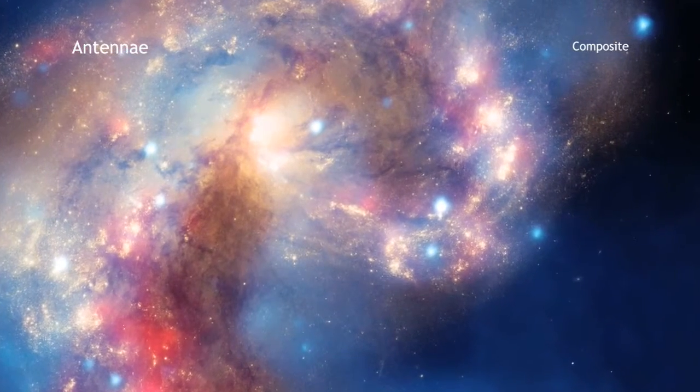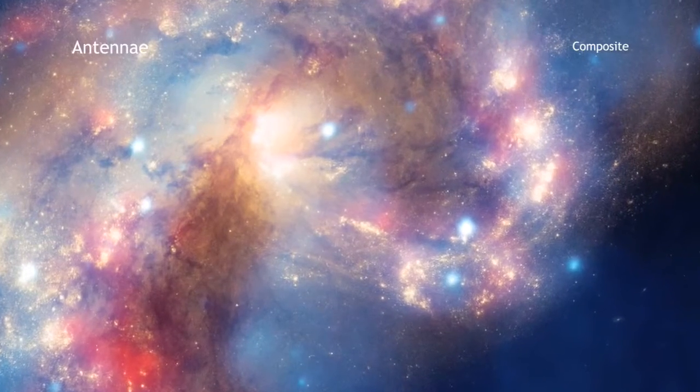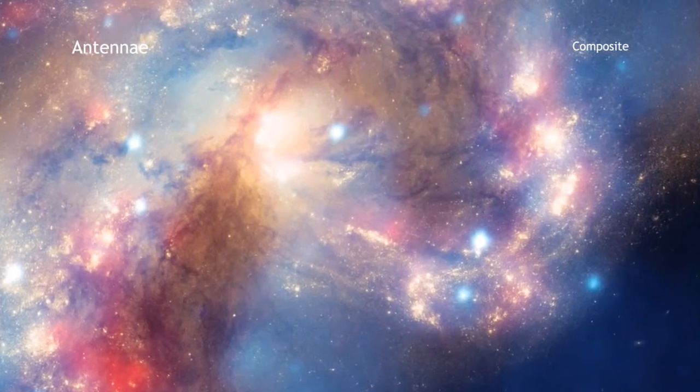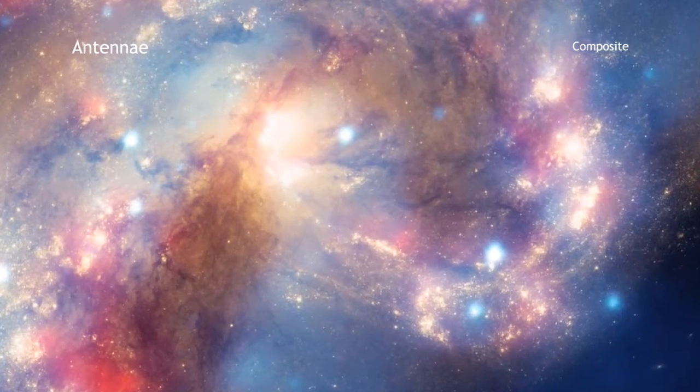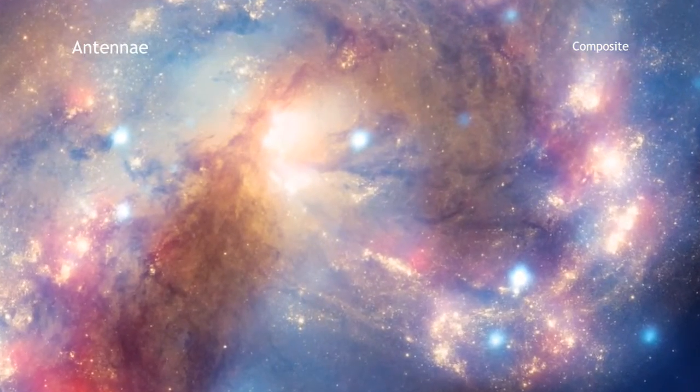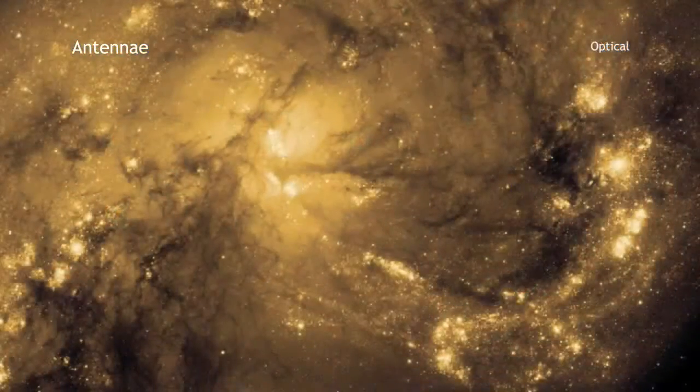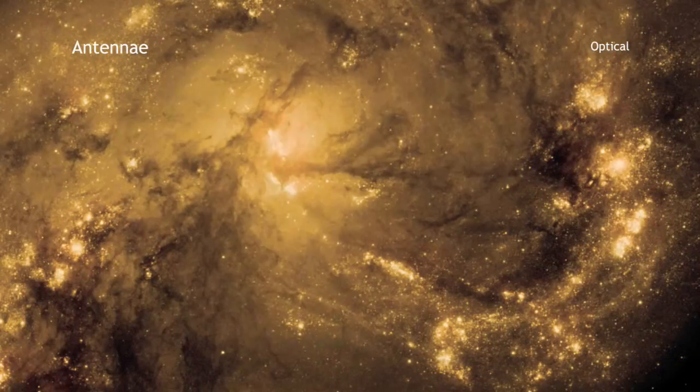This beautiful new image shows two colliding galaxies as seen by NASA's great observatories. The Antennae galaxies, located about 62 million light-years from Earth, are shown in this composite image from the Chandra X-ray Observatory, the Hubble Space Telescope, and the Spitzer Space Telescope.